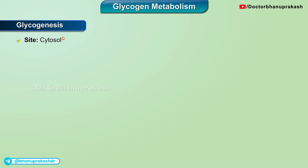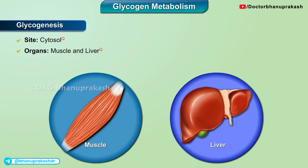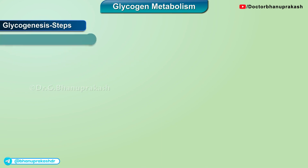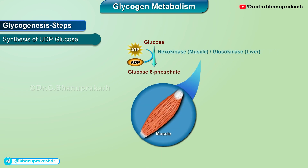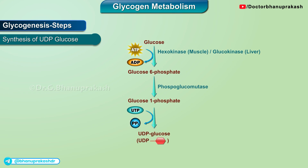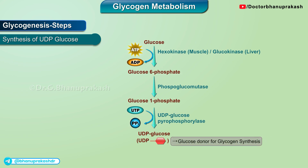Glycogenesis. The site is cytosol; organs are muscle and liver. The rate-limiting enzyme is glycogen synthase. Steps: synthesis of UDP glucose. Glucose is converted to glucose-6-phosphate by hexokinase in the muscle or glucokinase in the liver. Glucose-6-phosphate is isomerized to glucose-1-phosphate by phosphoglucomutase. Glucose-1-phosphate reacts with uridine triphosphate to form uridine diphosphate glucose and pyrophosphate by UDP glucose pyrophosphorylase. The glucose donor for glycogen synthesis is UDP glucose.